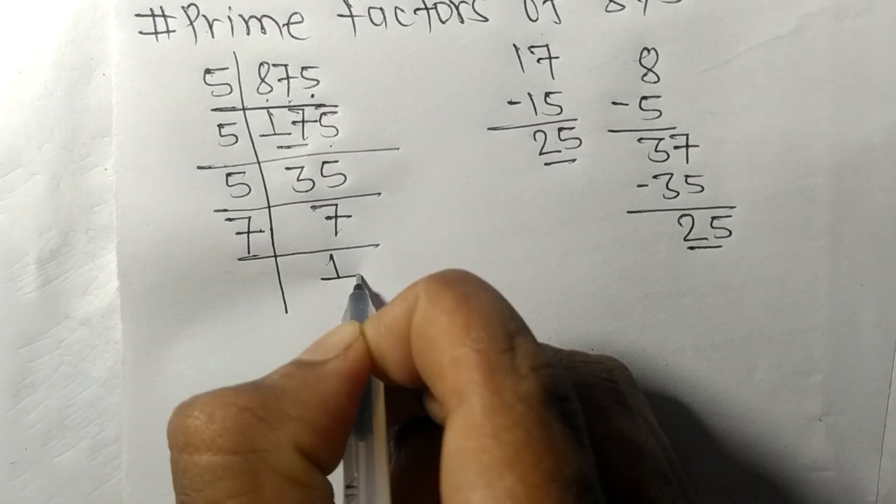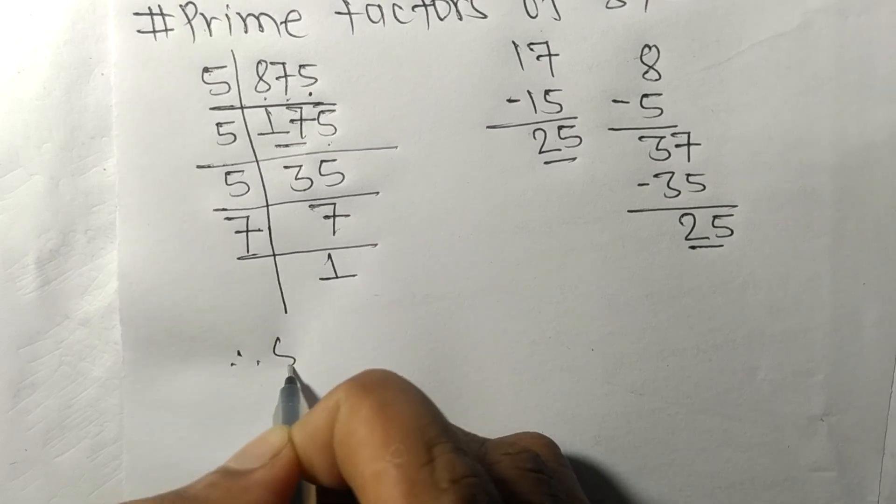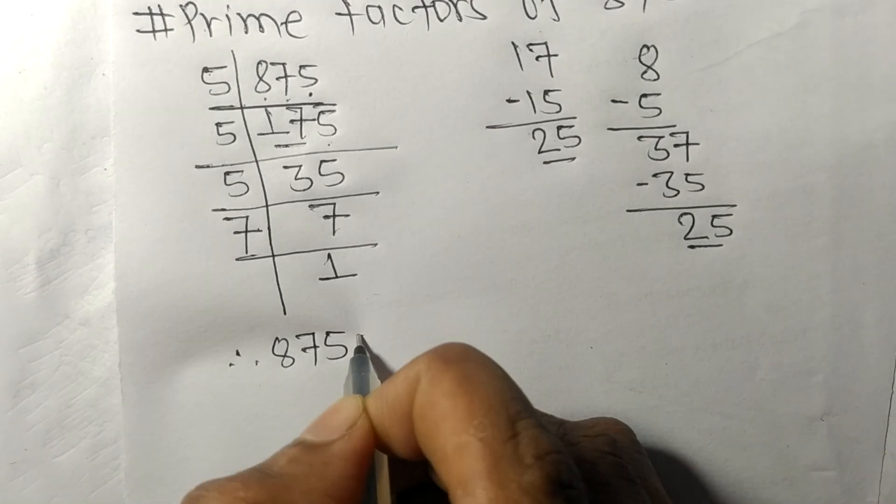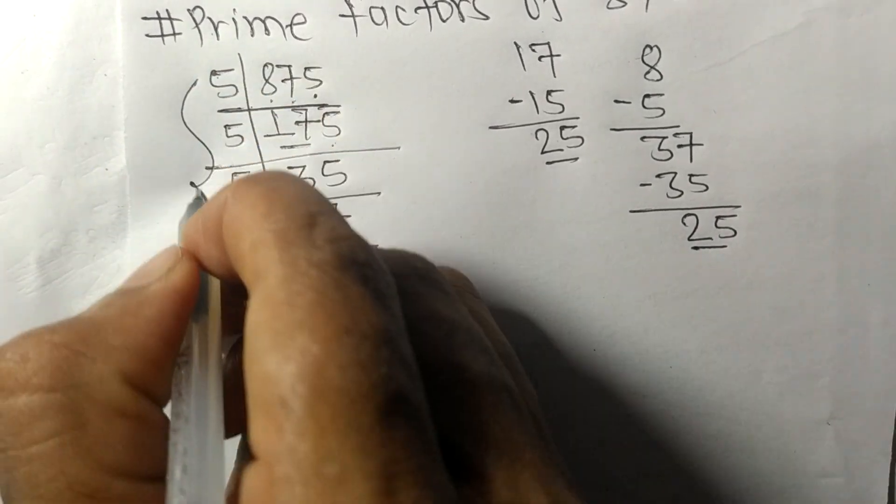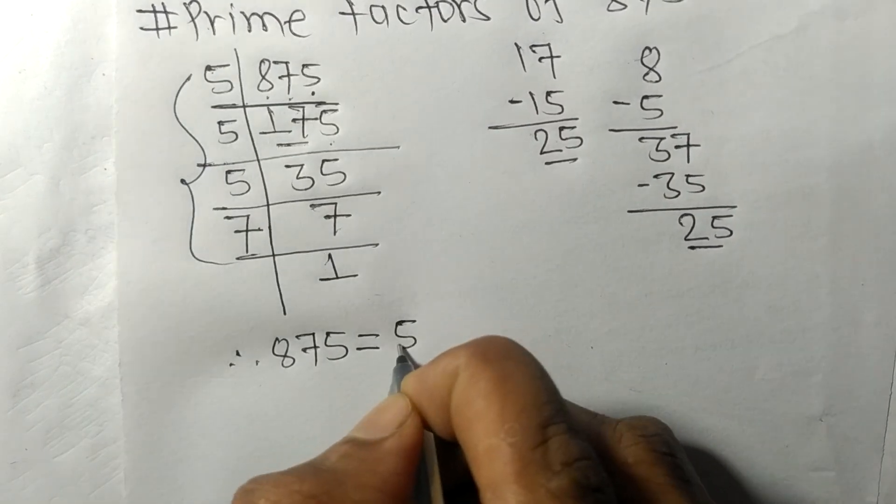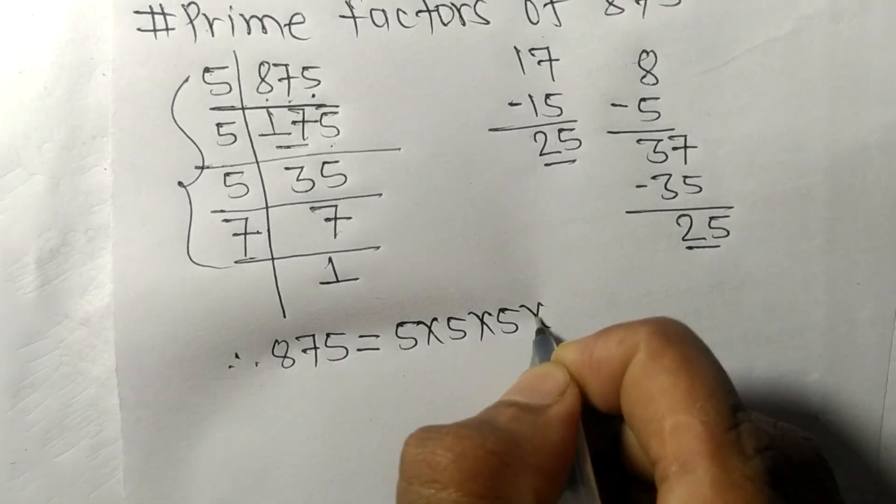Therefore 875 is equal to 5 times 5 times 5 times 7.